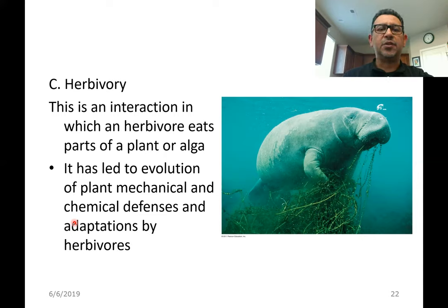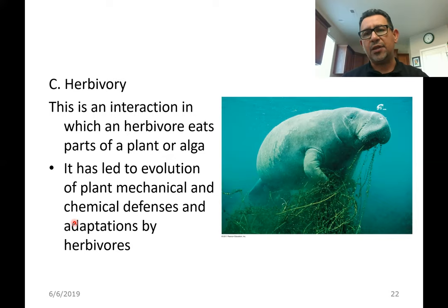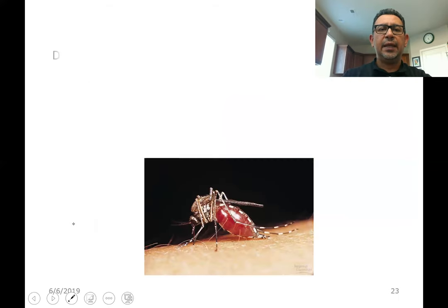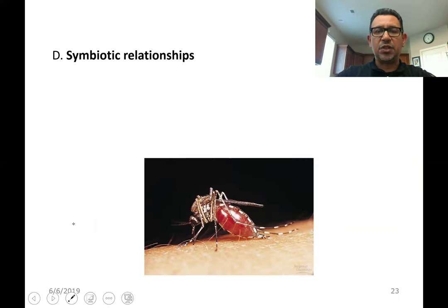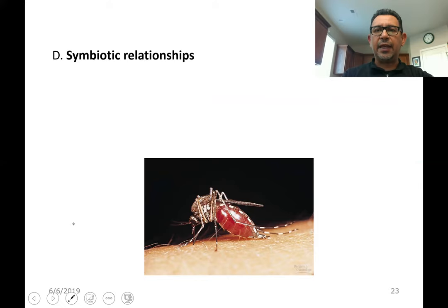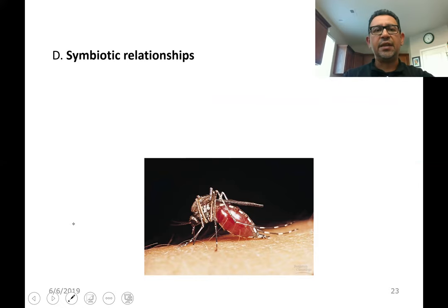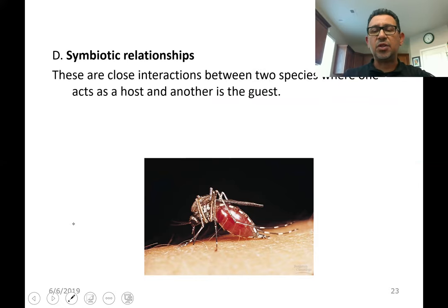Herbivory involves herbivores eating algae in an aquatic environment or plants in a terrestrial environment. Finally, one more community relationship I want to talk about is symbiotic relationships. We have discussed different examples of symbiotic relationships over the course of three quarters.